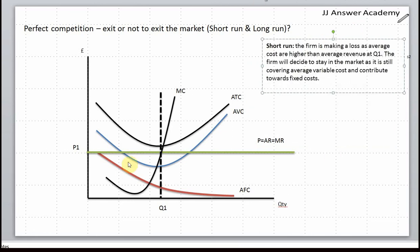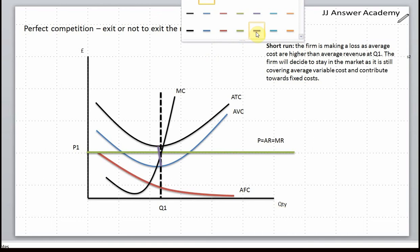This makes sense because this is your average variable cost. We can color that. So it's contributing towards its fixed cost and that's the contribution.